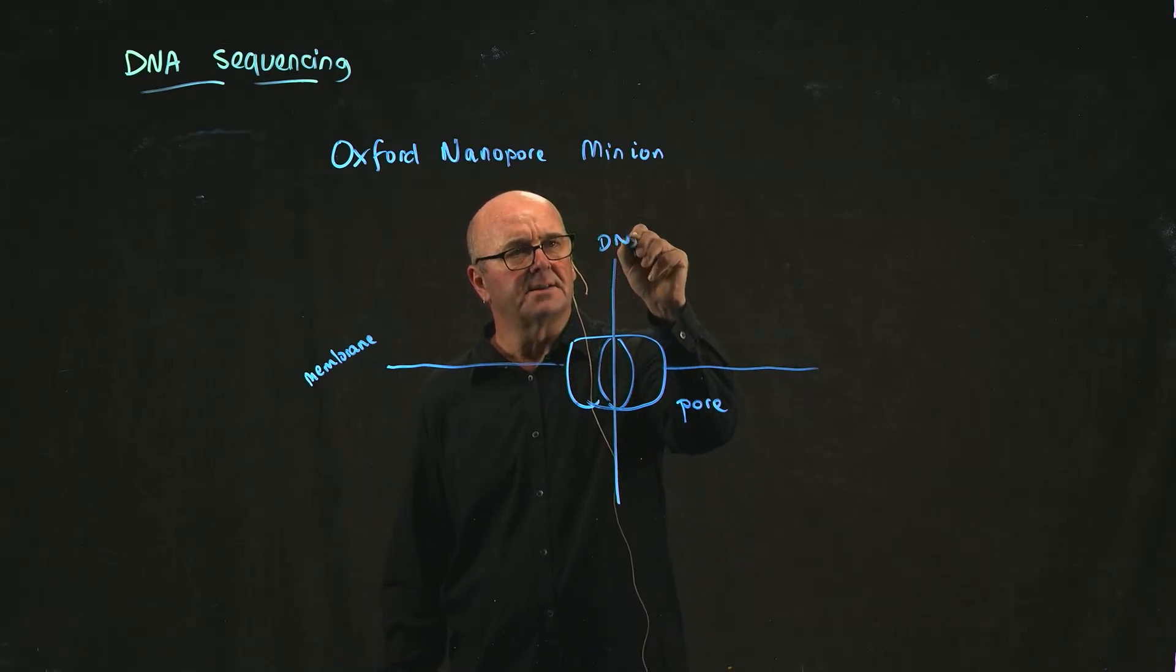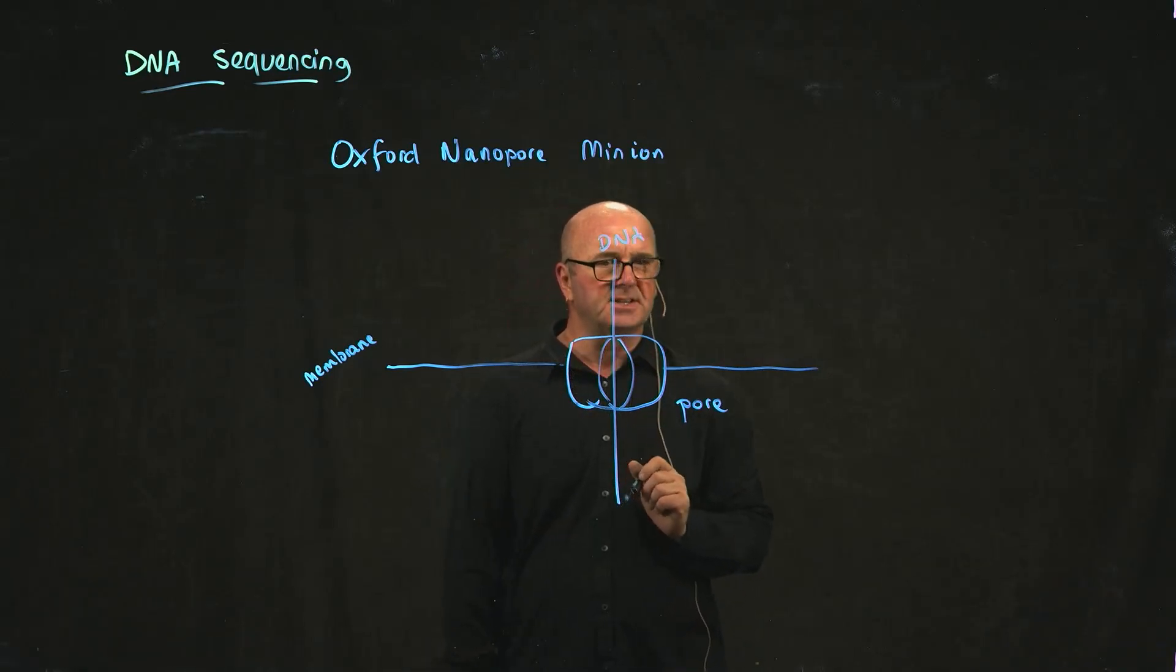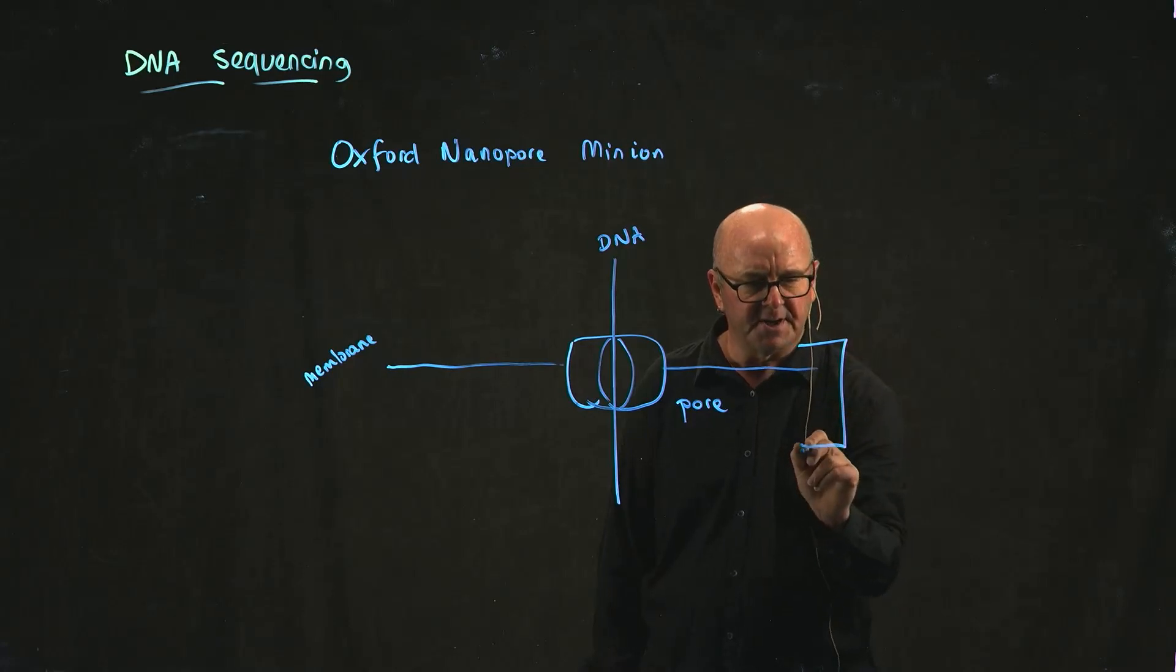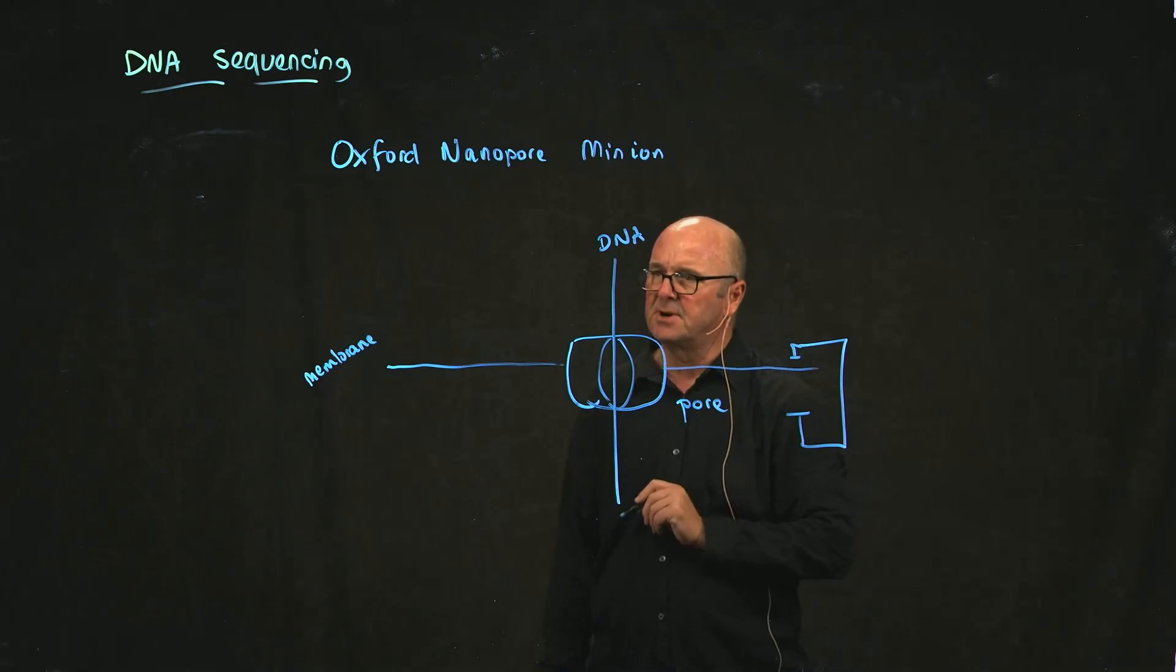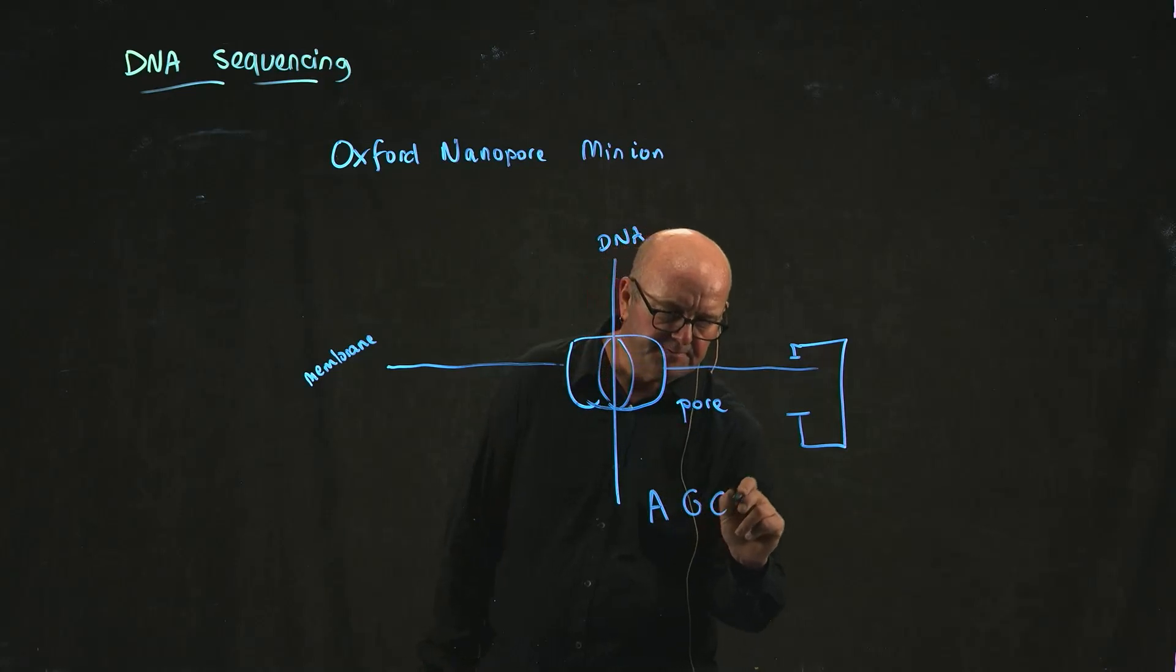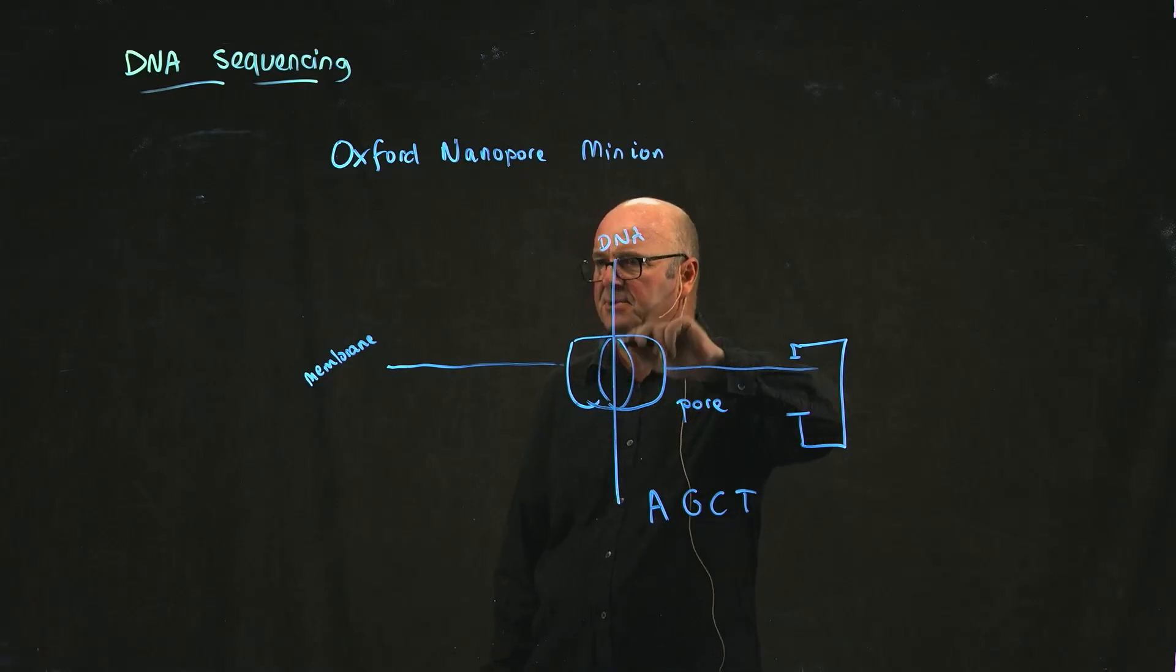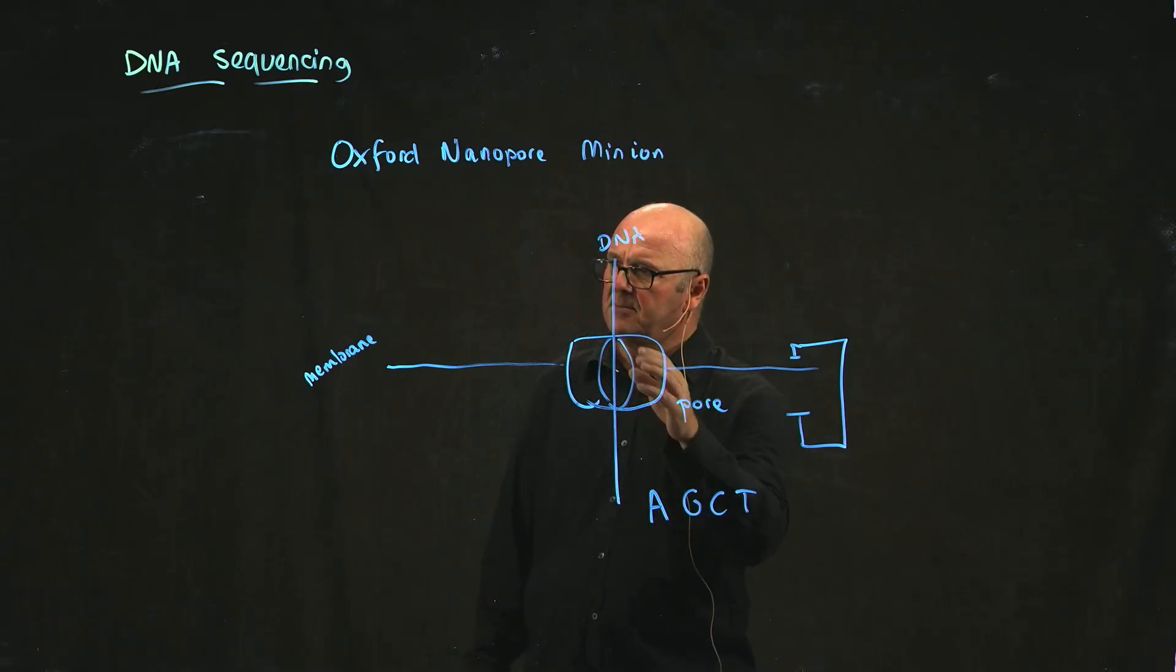As this sequencing technology suggests, they use a pore to do the sequencing. The way they detect which base is going through is by measuring the current or the resistance across this membrane. It turns out that each of the four bases have a slightly different size, and as the bases are going through this pore, the resistance or the amount of current that flows through changes as each base goes across.